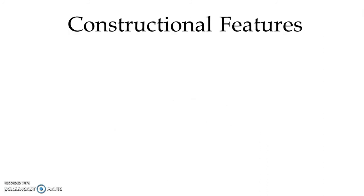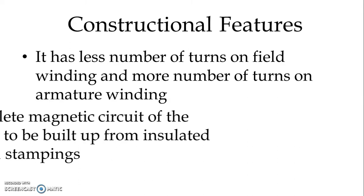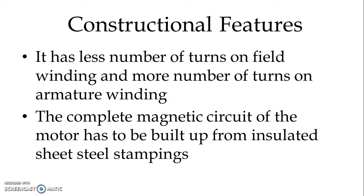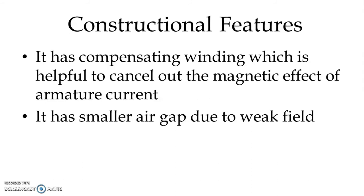Now let us discuss some of the construction features of the AC series motor. It has less number of turns on field winding and more number of turns on armature winding. The complete magnetic circuit of the motor has to be built up from insulated steel stampings. It has a compensating winding which is helpful to cancel out the magnetic effect of armature current. It has a smaller air gap due to weak field.